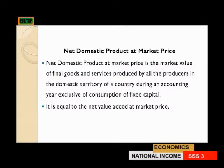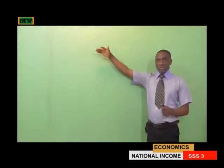We also have net domestic product at market price, which is the market value of final goods and services produced by all the producers in the domestic territory of a particular country during an accounting year, exclusive of consumption of fixed capital, that is depreciation. To get our net domestic product, we have to deduct the value of depreciation from GDP, the gross domestic product, and from there we arrive at our net domestic product.